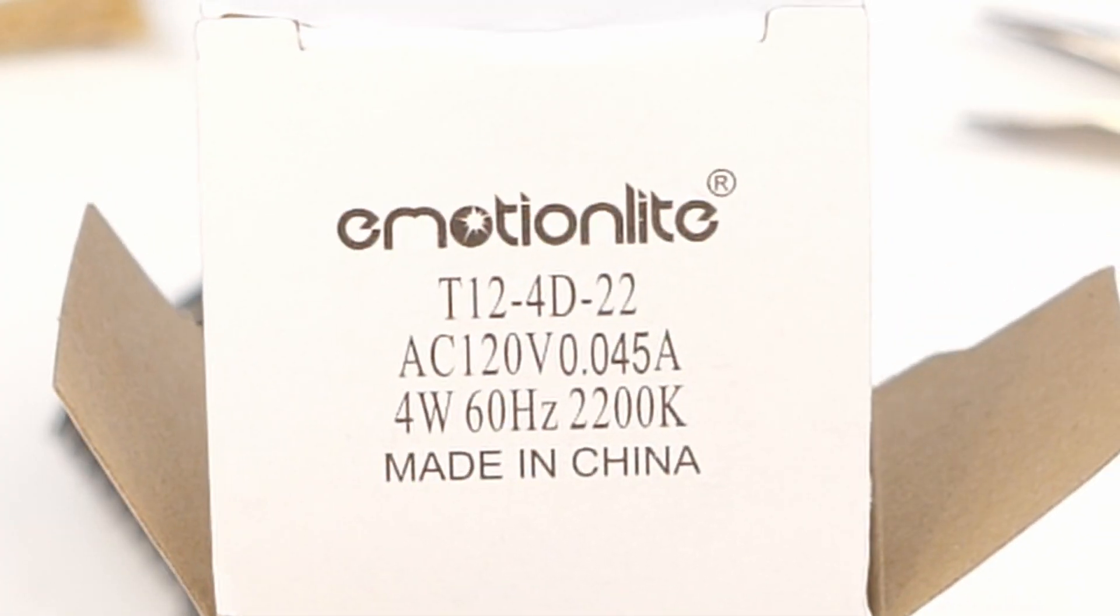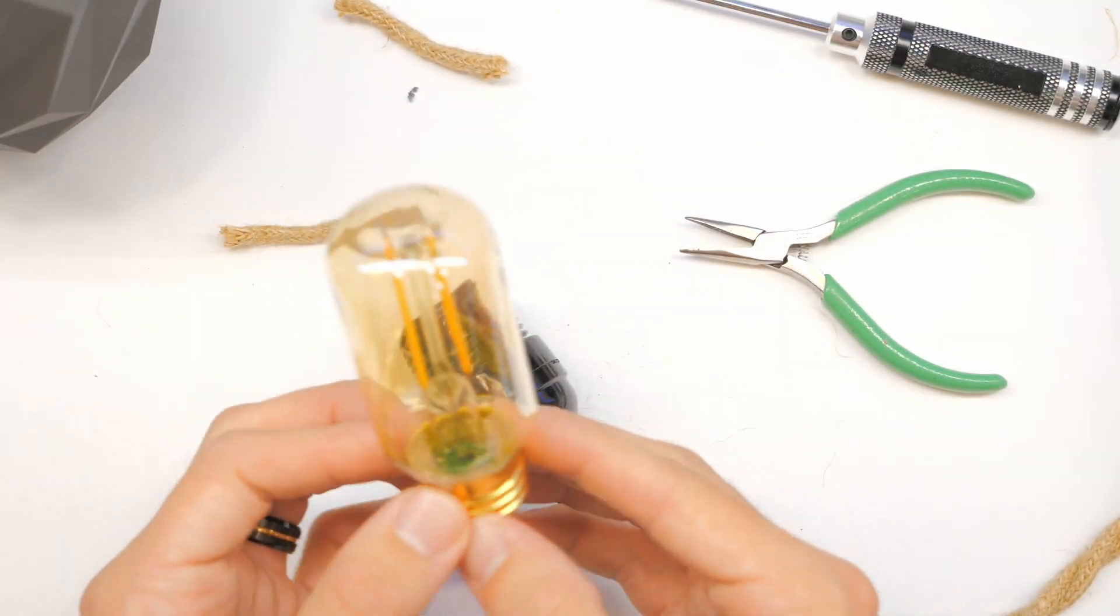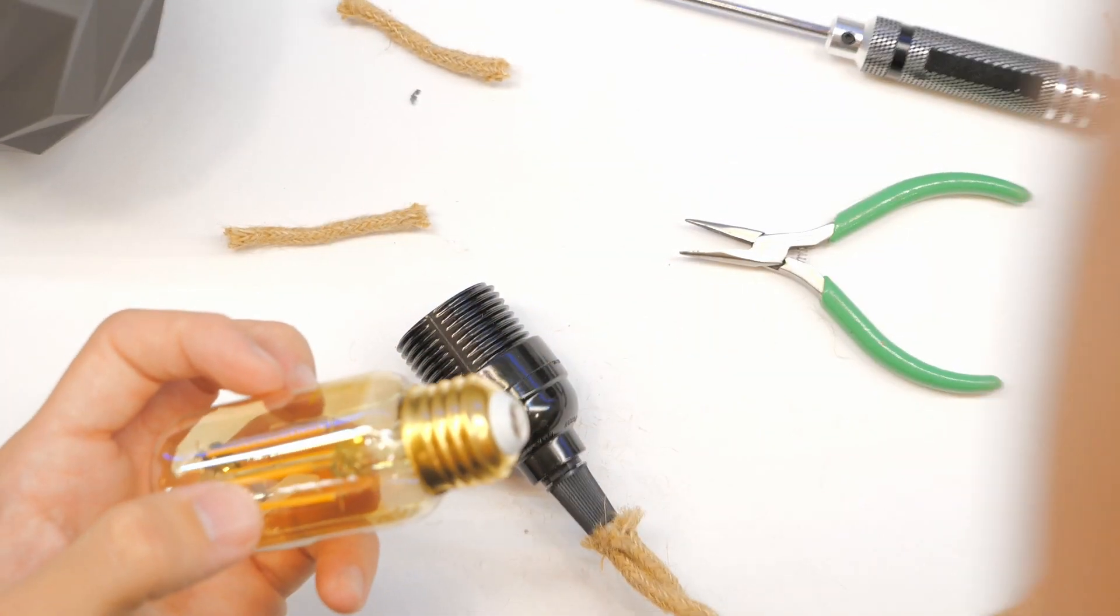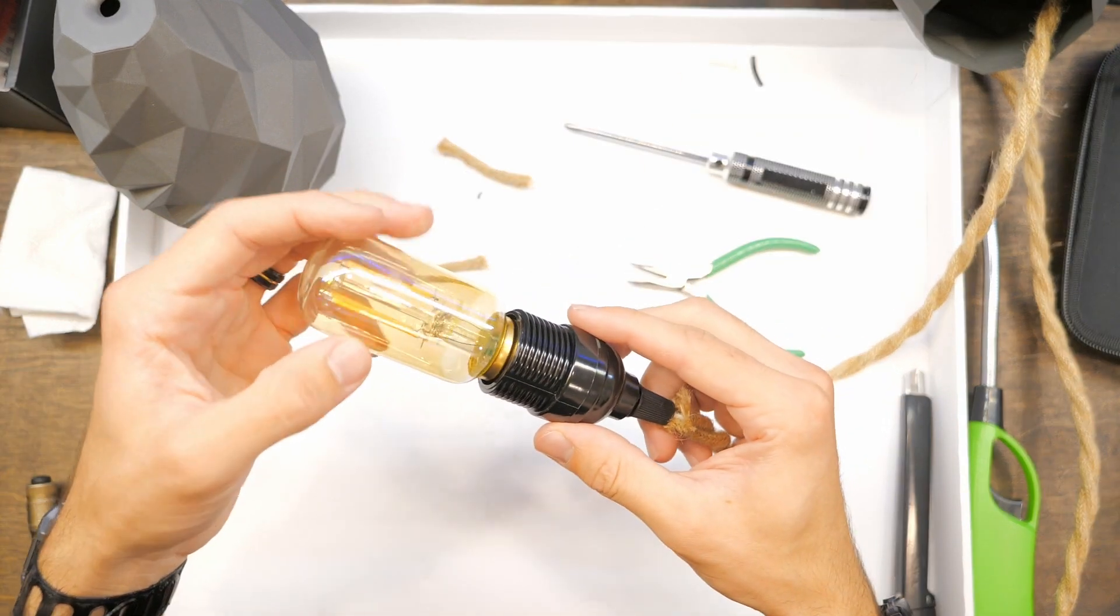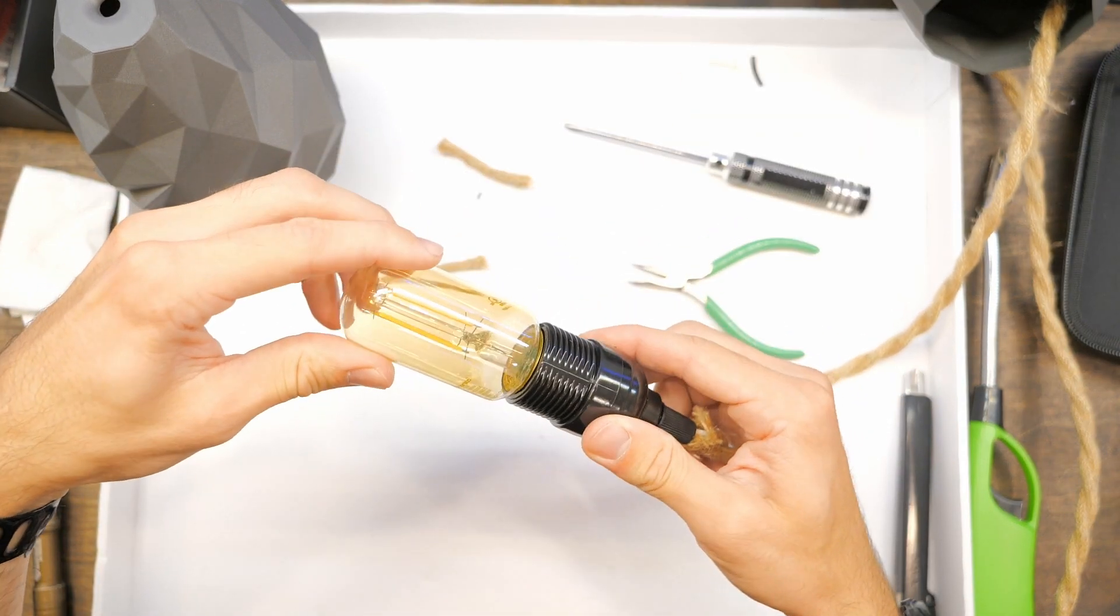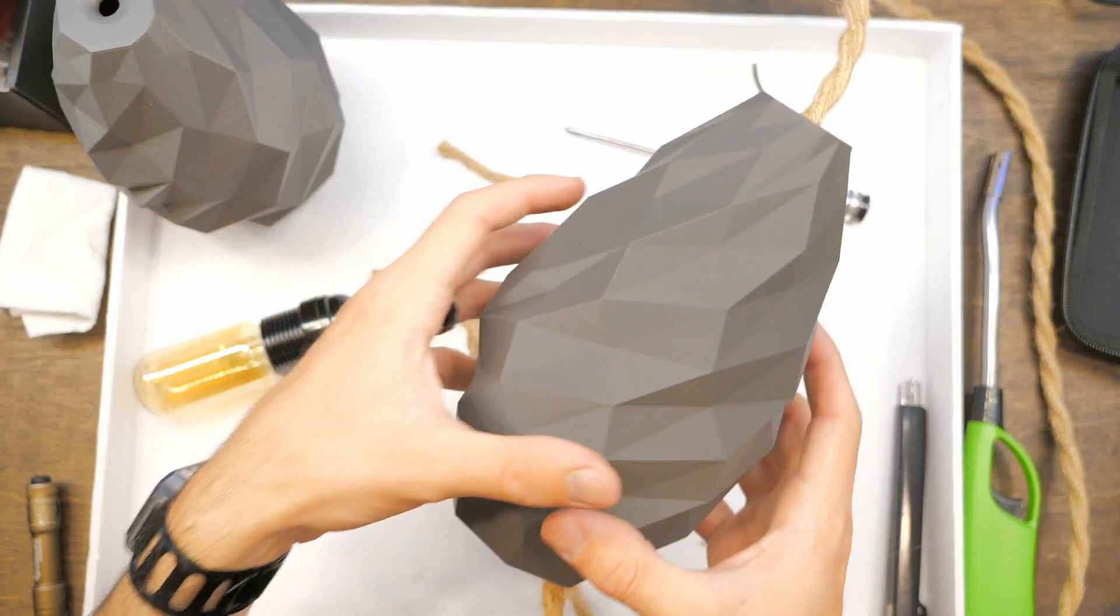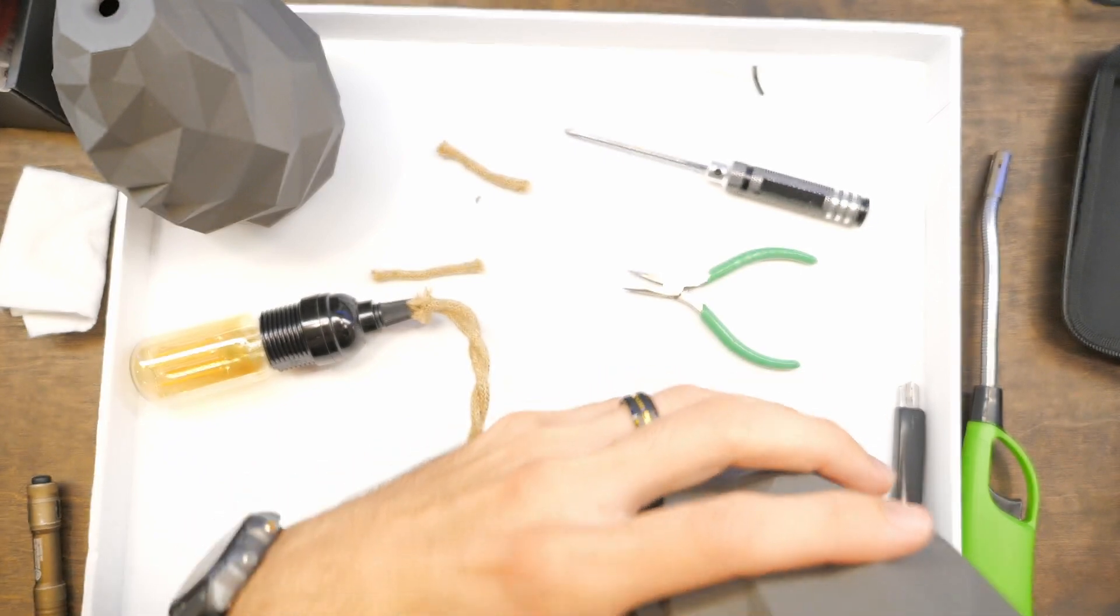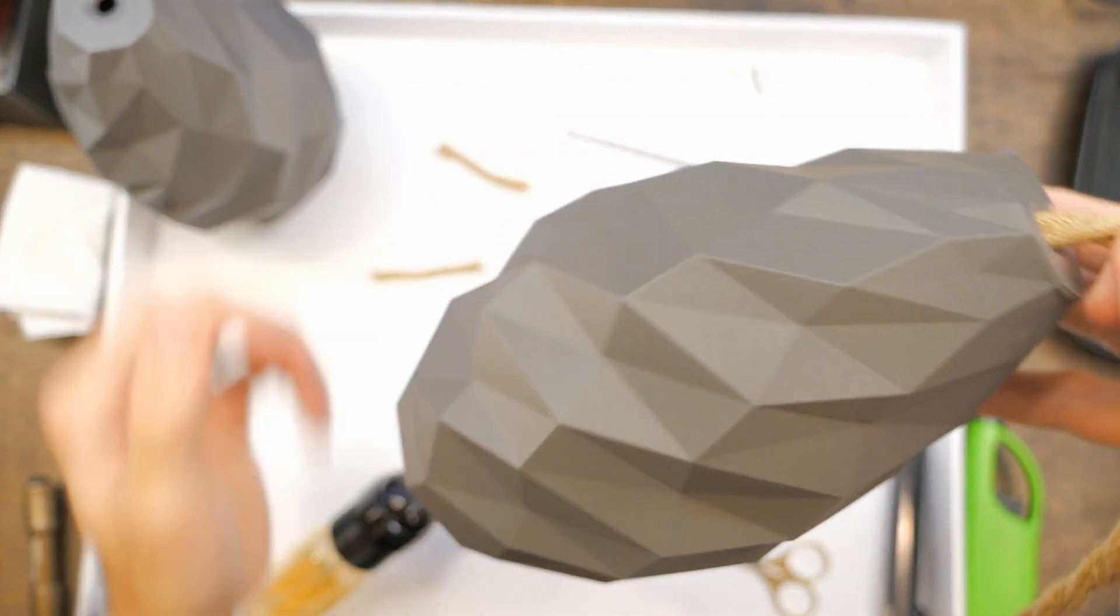We're going to get the light bulb. These are the ones that I got. I went with some really warm, these ones say 2200 kelvin lights, and they're not very bright because the lampshade is so opaque. But they do give off a nice glow, so I like these ones. But you could try some, you know, experiment with some different ones.